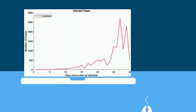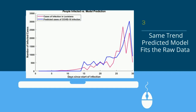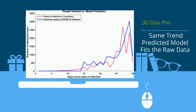The first graph shows the number of infected cases versus the days since the start of infection in the state of Louisiana. The blue line is the prediction based on the mathematical model and the red line is the plot of the real data. You can see that the prediction line follows the trend of the real data very well and fits as well.